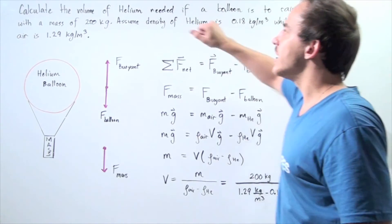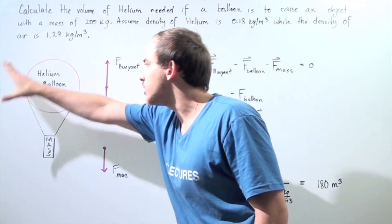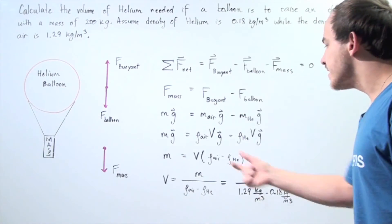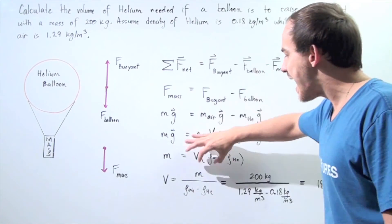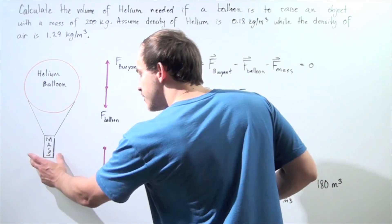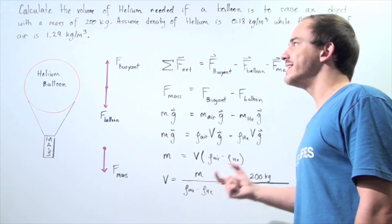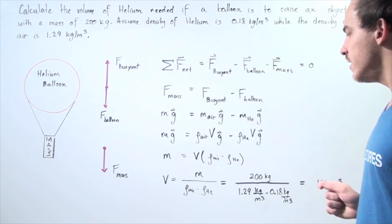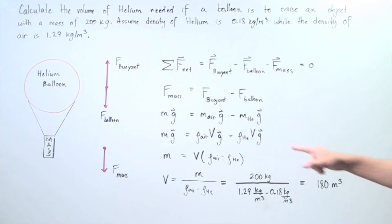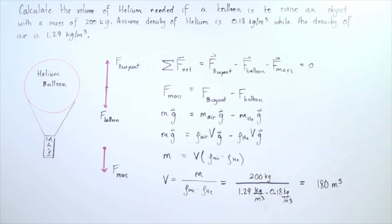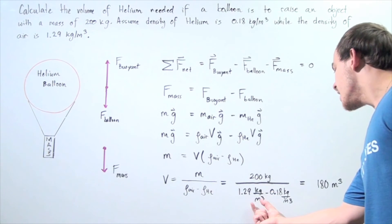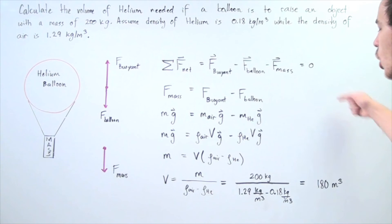Since we want to calculate the volume of this balloon, the volume of helium needed, we simply solve for volume. The volume is equal to the mass of our load divided by the difference in the densities of the air and the helium. So mass is 200 kilograms, divide that by 1.29 minus 0.18. The kilograms cancel and the meter cubed goes on top, and we get a value of 180 meters cubed.